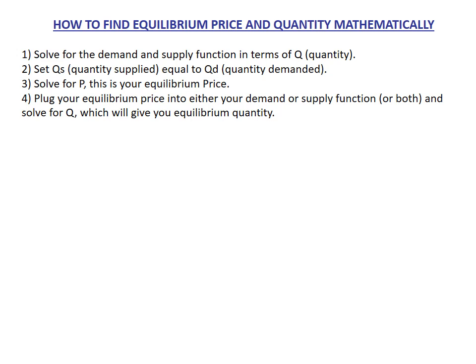So how do we find equilibrium price and quantity mathematically? It's really easy. The first step is you solve for the demand and supply function in terms of quantity — the question will usually give you this. The second step is you set your quantity supplied equal to your quantity demanded. Your market is in equilibrium when your quantity supplied is equal to your quantity demanded.